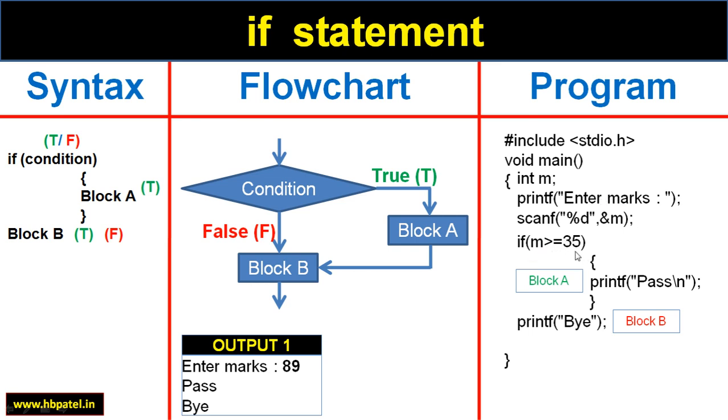So 89 is greater than or equal to 35. Yes, we know that 89 is greater than 35. So in that case this is true. So it will go here block A and then it will go here block B. So it will print pass bye. So I will get pass and bye as an output.